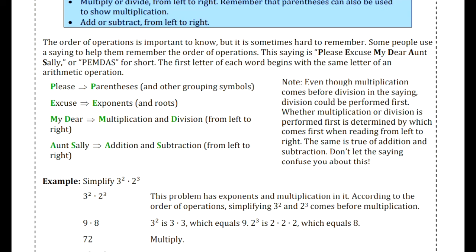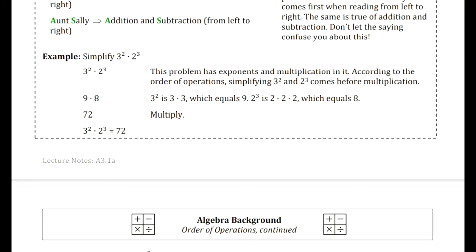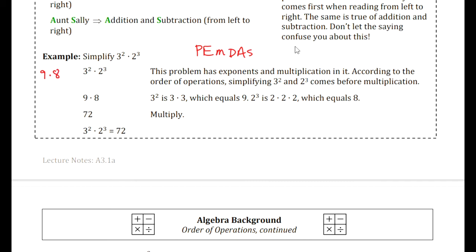Let's practice with some examples. In this example, we have 3 squared times 2 cubed. We work through PEMDAS. There are no parentheses, so we move to exponents. 3 squared is 9, and 2 cubed is 8. Then we go to multiplication: 9 times 8 is 72. There are no more operations, so we're done.